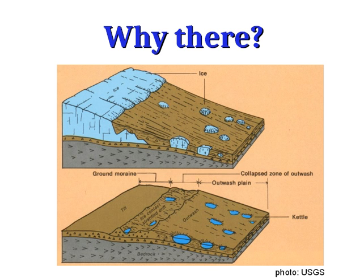Then we can ask, why is it there? Why is there a lake of this type in this particular location? We can look to a variety of theories that might explain why a particular thing is in a particular place. In this case, we have a pretty good idea of why Lake LaBeouf is where it is — it's an example of a kettle, which is a type of lake created by glacial activity. In a later lesson, we'll go into more detail about exactly how a kettle is formed.